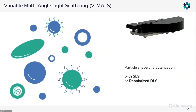The V-MALS technique is also used to characterize particle shape using static light scattering by determination of the form factor. One can also use depolarized light scattering by introducing polarizers into the system, which is an available option. With this, one can characterize dense spheres, hollow spheres, fully loaded or unloaded carriers like AAV capsids, functionalized particles, or anisotropic particles such as ellipsoidally shaped ones.